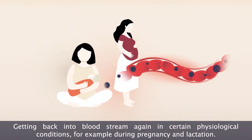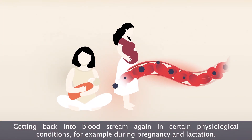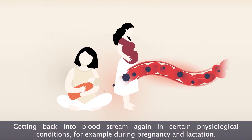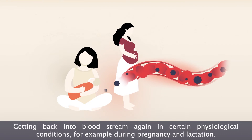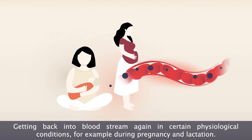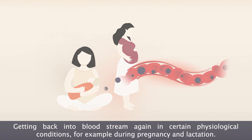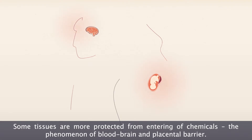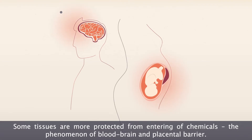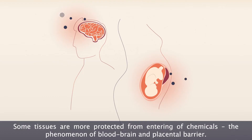They can get back into the bloodstream again in certain physiological conditions, for example during pregnancy and lactation. Some tissues are more protected from the entering of chemicals — the phenomenon of blood-brain and placental barrier.